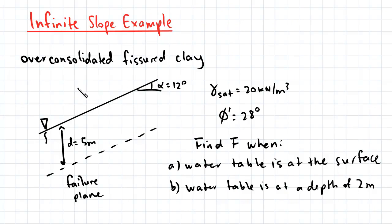Here we have an infinite slope, the soil being overconsolidated fissured clay. The slope is inclined at an angle of 12 degrees and the depth to the failure plane is 5 meters. We also have a water table at the surface, so our saturated unit weight is 20 kilonewtons per meter, which we can also assume to be the same as our total unit weight.